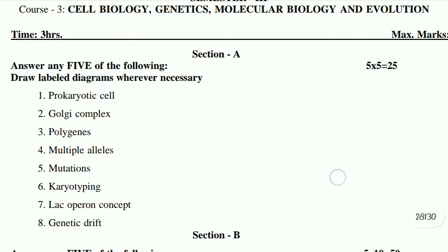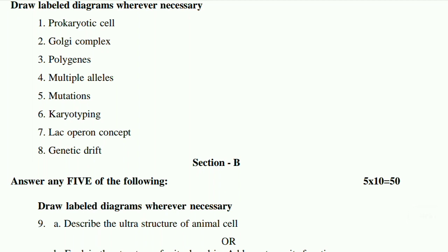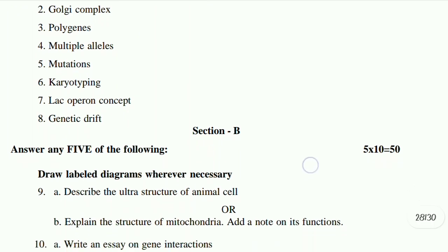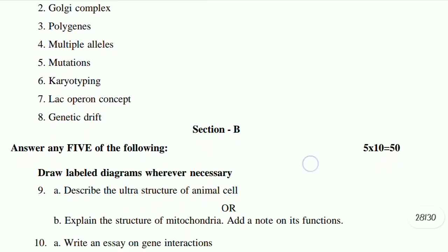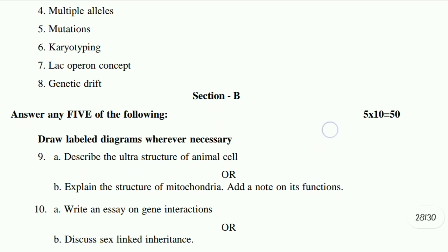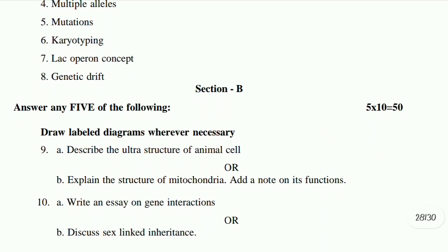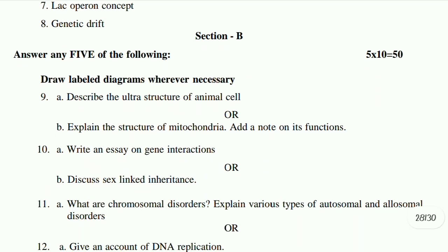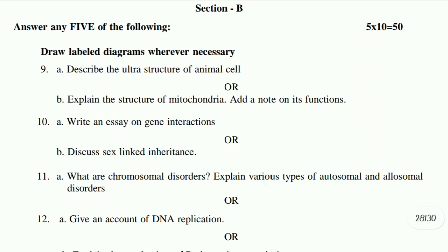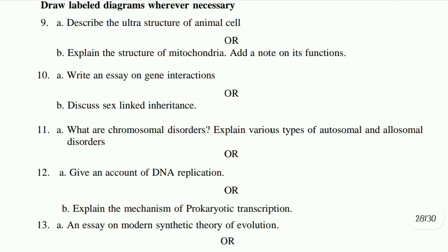Now for the Essays: 9th — (a) Describe the ultrastructure of animal cells, (b) Explain the structure of mitochondria and add a note on its functions. 10th — (a) Write an essay on gene interactions, (b) Discuss sex-linked inheritance. 11th — (a) What are chromosomal disorders? Explain various types of autosomal and allosomal disorders.